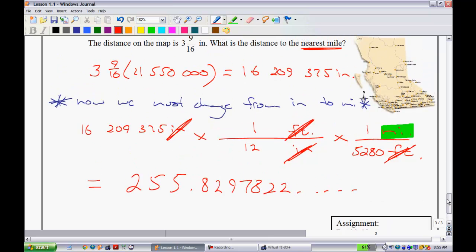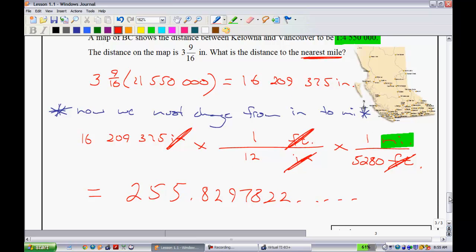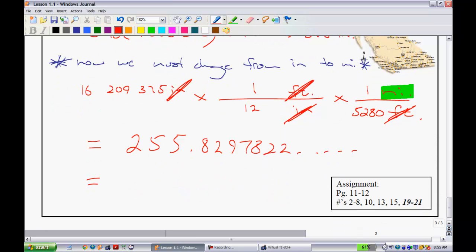But this is where you've got to be careful. It said to answer to the nearest mile. That would not get you full marks on a quiz. I would take off half a mark for that. What you now need to do is round up. So, of course, if we're rounding, we take this, round this one up. Eight rounds it up. So we have 256 miles as your final answer.